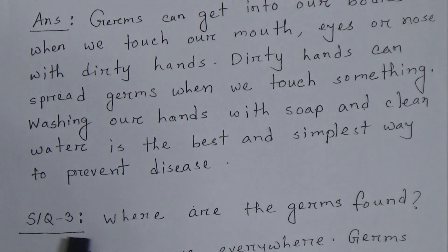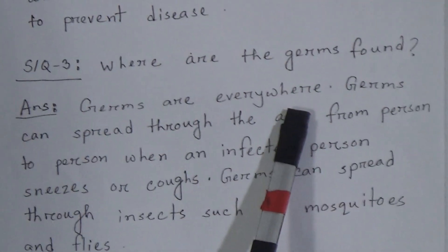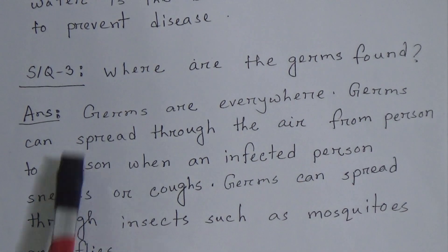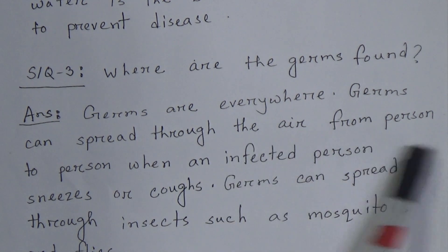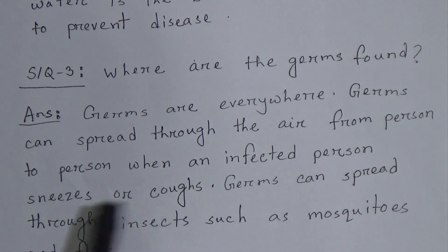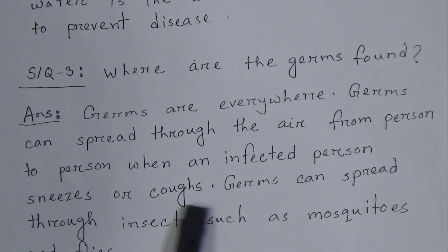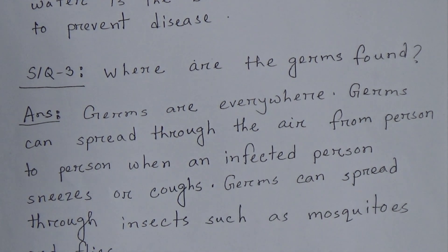Short question number three — where are the germs found? Answer: Germs are everywhere. Germs can spread through the air from person to person when an infected person sneezes or coughs. Germs can also spread through insects such as mosquitoes and flies.